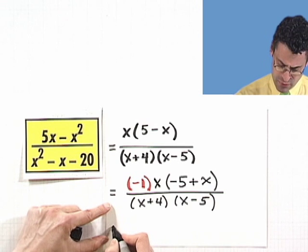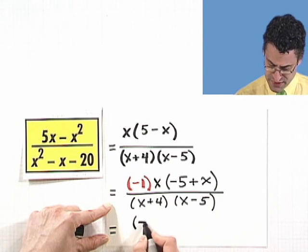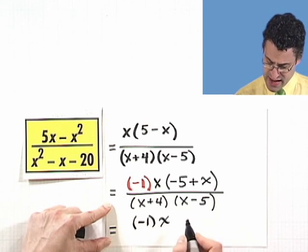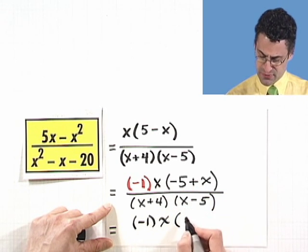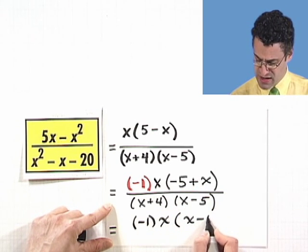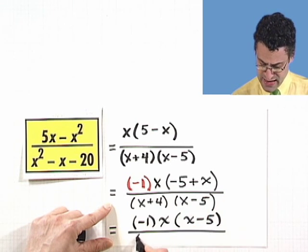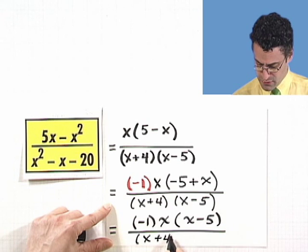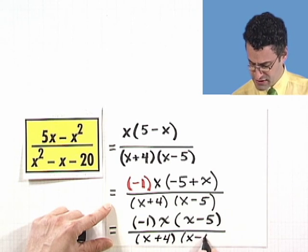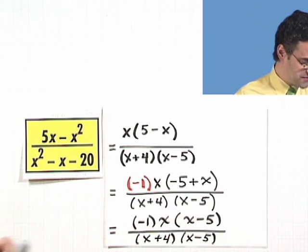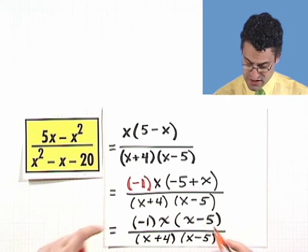And maybe to show detail, let me do one more step here. So I've got the negative 1 times x. And here, let me just rewrite this. Because since it is an addition, I can write it any order I want. So I'll write x minus 5. And now we can see that I have a common factor in the numerator and denominator of x minus 5. It's a common factor. So I can cancel. Simplify.